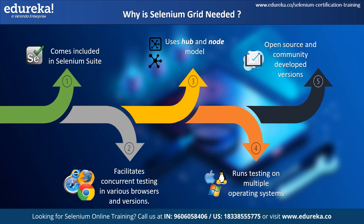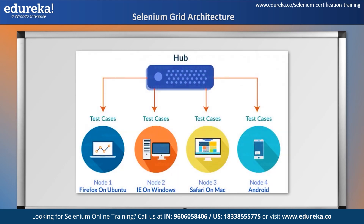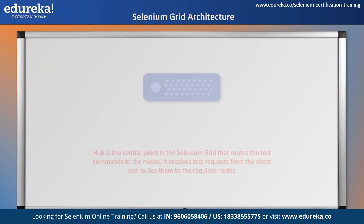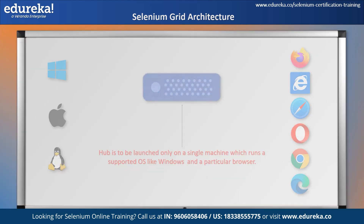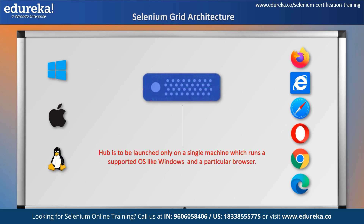Now, how does all of that work? Let's take a look at its architecture. Selenium Grid works in the hub and node model, where one particular hub is connected to multiple nodes with the capability to run on various machines, browsers, and different browser versions. The hub acts as a central point in Selenium Grid, which routes test commands to the nodes and receives test requests from the client. The hub is launched on a single machine with a definitive operating system and browser, where the complete testing environment can be set.